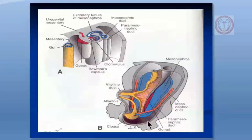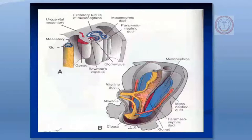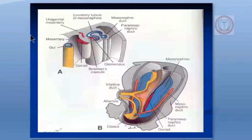Temporarily the mesonephric system will function, but later on most of it will also disappear. The permanent kidney will form from the metanephros. Regarding the metanephros: it is the definitive kidney system, formed in the pelvis, and appears in the fifth week. The metanephric mesoderm provides the excretory units, while the ureteric bud gives rise to the collecting system. The ureteric bud itself develops from the mesonephric duct close to the cloaca — the mesonephric duct is also called the Wolffian duct.